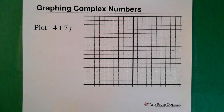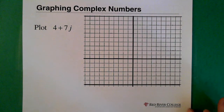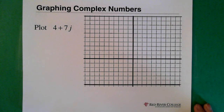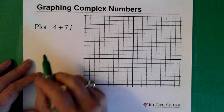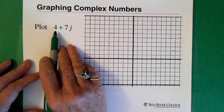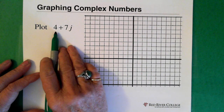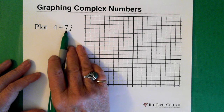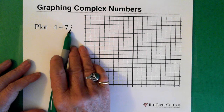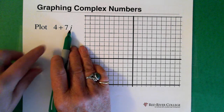Alright, so the first thing we're dealing with here is plotting 4 plus 7j. Just a reminder that the 4 is the real number and the 7j is the imaginary number.